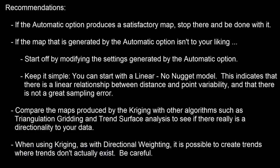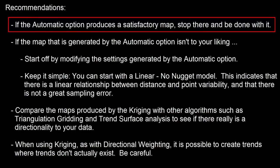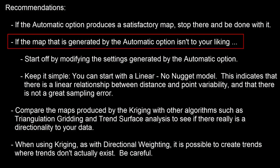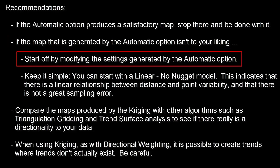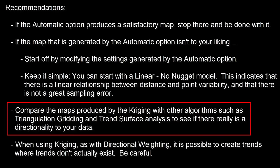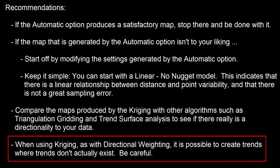And now for some recommendations. If the automatic option produces a satisfactory map, stop there. If not, start by modifying the settings generated by the automatic option. Keep it simple — you can start with a linear no-nugget model, which indicates a linear relationship between distance and point variability with no great sampling error. Compare the maps produced by kriging with other algorithms such as triangulation and trend surface analysis to see if there really is a directionality to your data. When using kriging, as with directional weighting, it is possible to create trends where trends don't actually exist — so be careful.